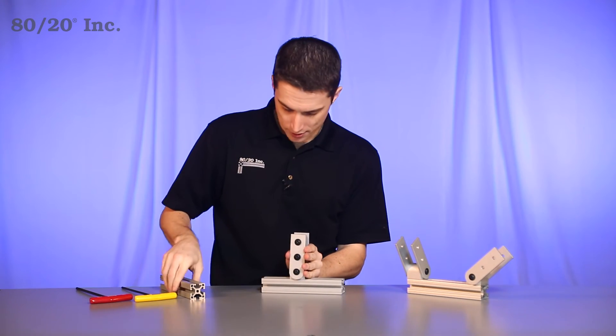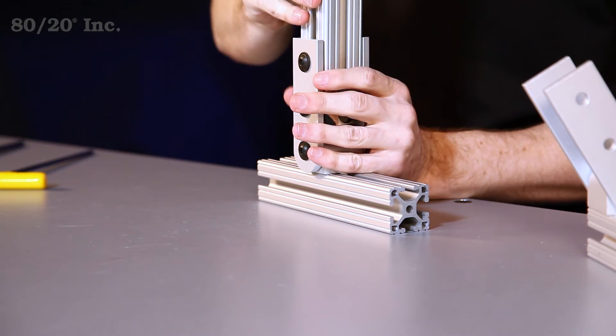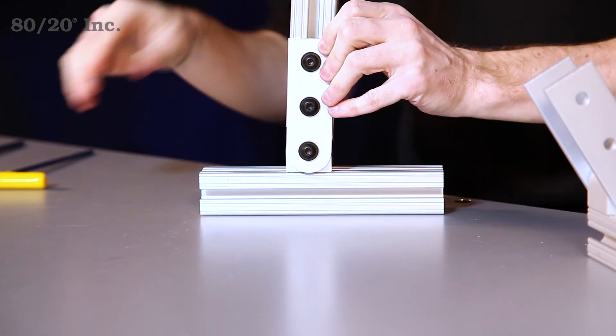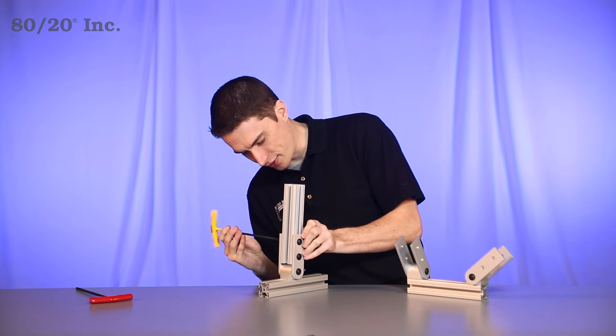From there, we're ready for our next bar. We'll slide it right onto the arms of the structural pivot. We'll take our wrench and tighten down that hardware.